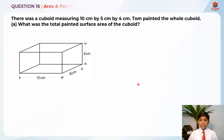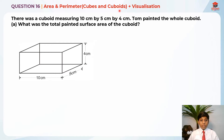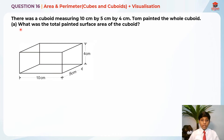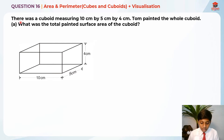This question is testing us on area and perimeter using cubes and cuboids, and we need a lot of visualization in order to solve this question. This question has two parts: Part A and Part B, but in Part B there are another two parts — Part B(i) and Part B(ii). Let's read the question first for Part A.